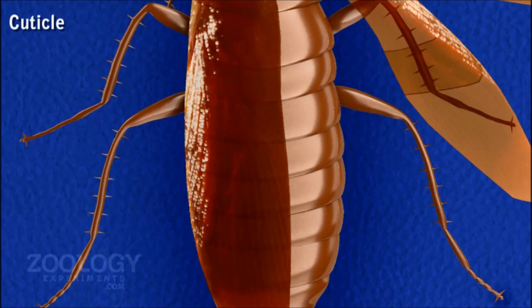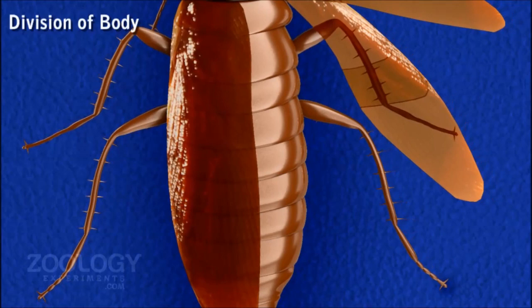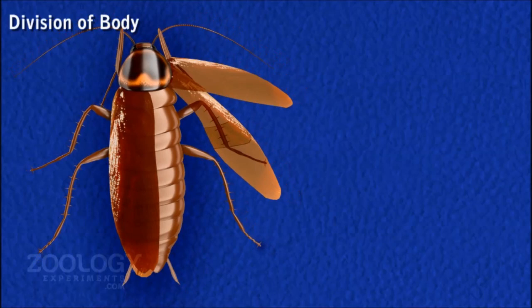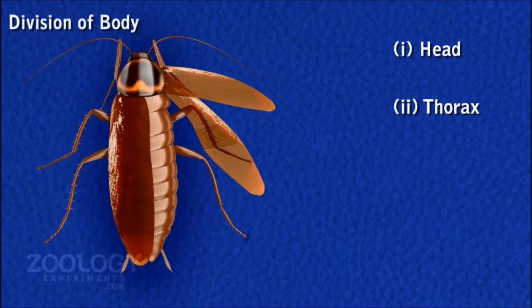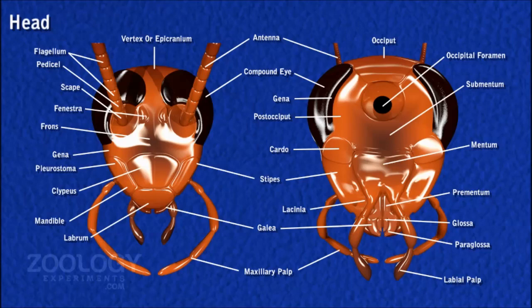The exoskeleton is secreted by the underlying hypodermis. The body of the cockroach is distinctly divided into three tagmata: (1) head, (2) thorax, and (3) abdomen. The head is the anterior region of the body; it is small and triangular, situated at right angles to the body, and is hardly visible in dorsal view.